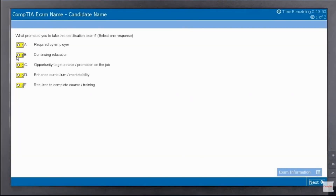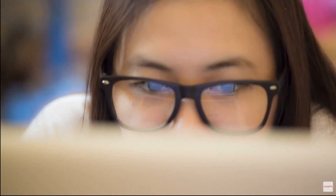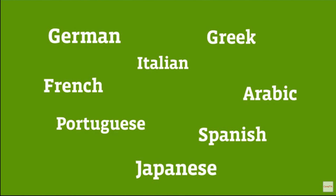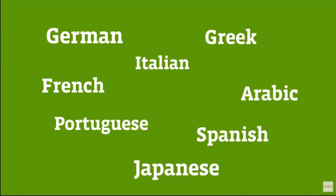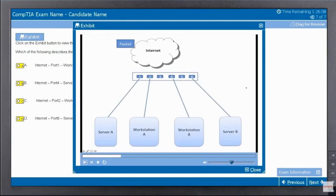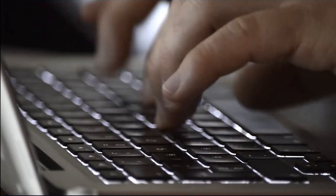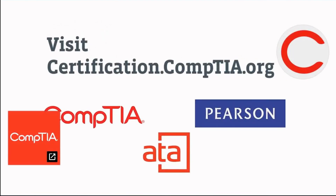Before you click End Exam, you may be asked to complete a short survey. Afterward, you'll see your score. CompTIA may add question types to its exams not shown in this video. All translated exams provide the same functionality as English language exams, though clicking the Exhibit button on translated exams will show questions and options in English. We wish you the best on your certification exam.